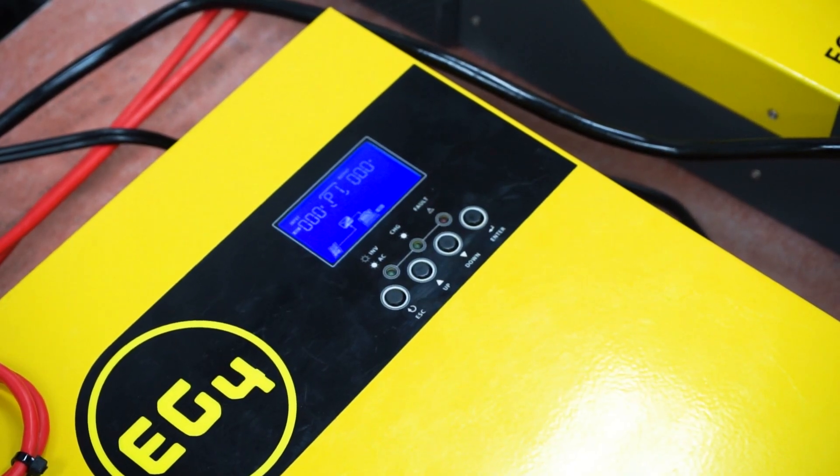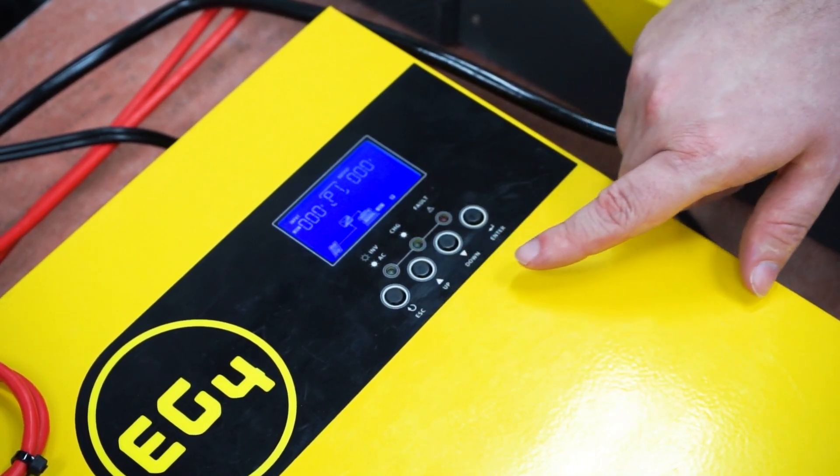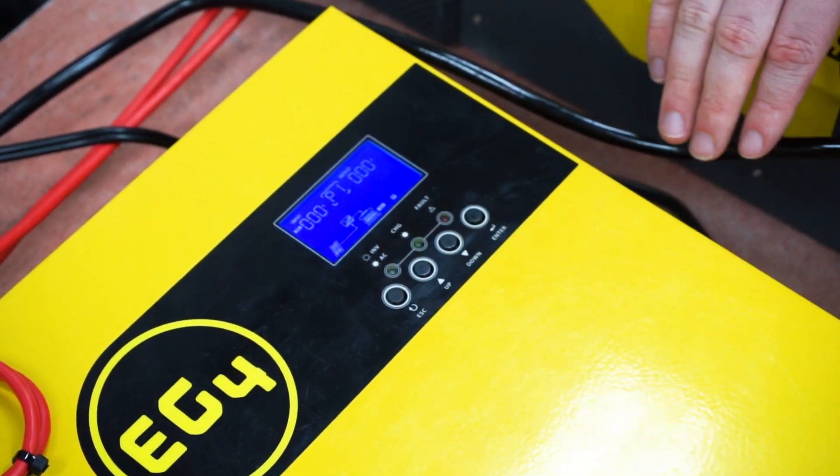When you're looking at the front you have the screen and then four buttons. You've got escape, up, down, and enter, and I'll show you how to use those in a second here.